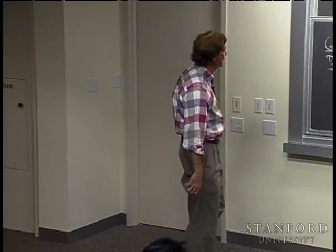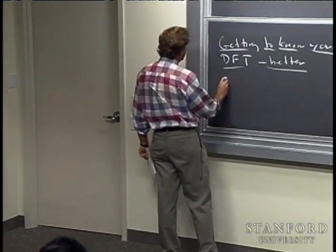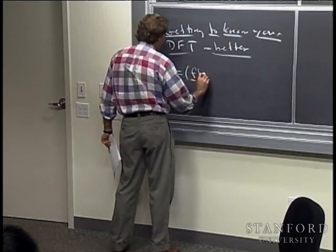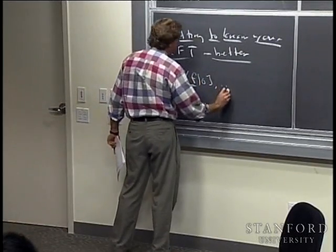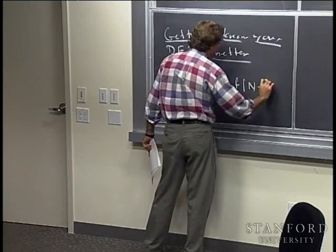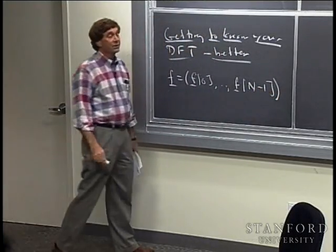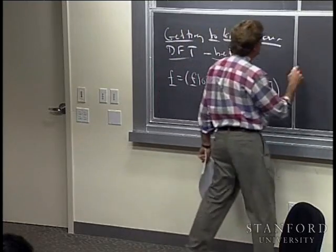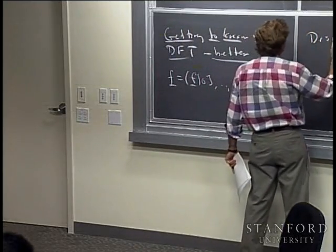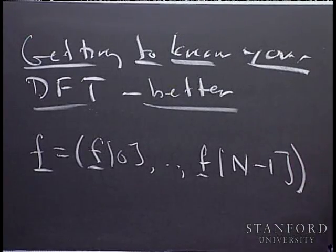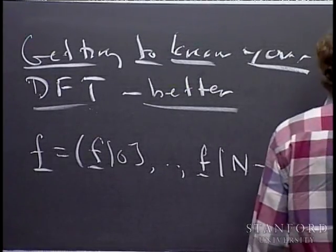Let me remind you of the basic definitions. You start out with a discrete signal, which I'm writing in this form — you can think of it as an n-tuple of N numbers. The discrete Fourier transform of this takes the discrete complex exponentials, which are the essential building blocks.